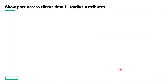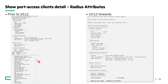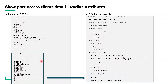Next is an example with RADIUS attributes. Prior to 10.12, the show port access client detail show command displays the RADIUS attributes information as well as role information, including all role parameters regardless of assigned values. From 10.12 onwards, this display is reduced — it will show only the assigned values of the role and will not display additional unassigned role parameters.